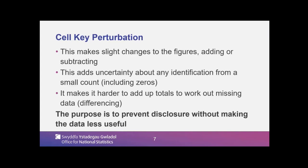Cell key perturbation is where we make slight changes to the figures. The method in slightly more detail: we attach a number to every single record, and then we work out from those numbers in a cell a perturbation. So if you get the same records in a cell, you will always get the same perturbation level. The purpose is to add uncertainty about any identification from a small count. We do also perturb zeros, which requires a different coding method. It makes it harder to add up totals to work out the missing data, and this is just to prevent disclosure without making the data less useful.